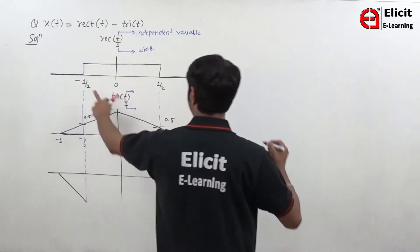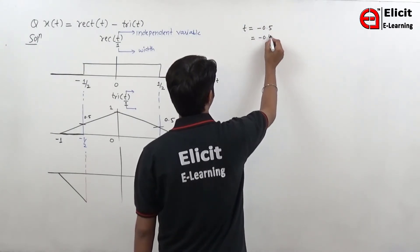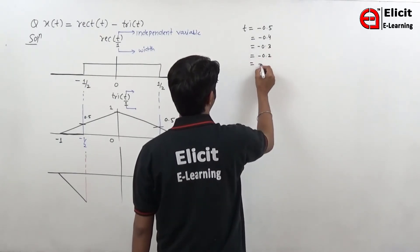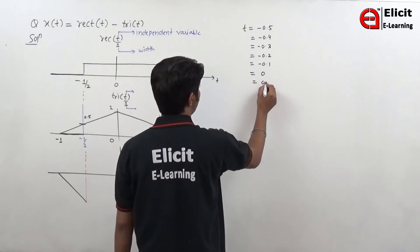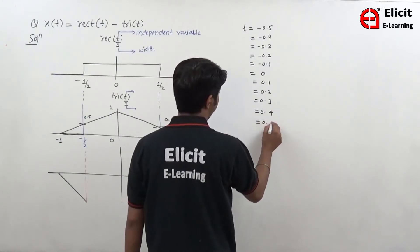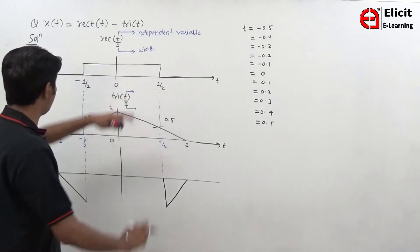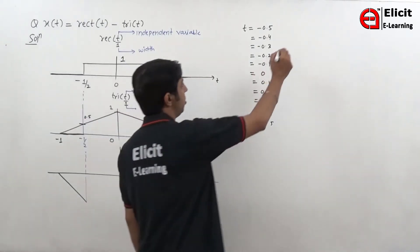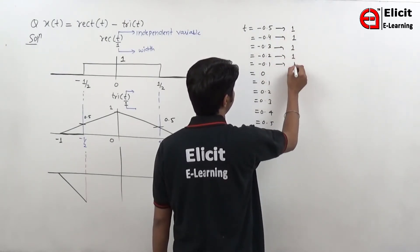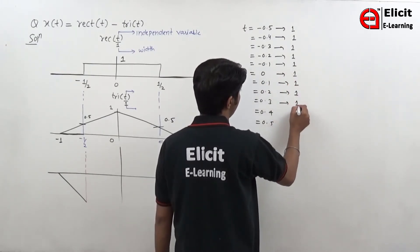So looking at different intervals: T equal to minus 0.5, minus 0.4, minus 0.3, minus 0.2, minus 0.1, then 0.1, 0.2, 0.3, 0.4, 0.5. From minus 1 by 2 to plus 1 by 2, the rect signal's height is 1 throughout — so the value is 1 at all these points.